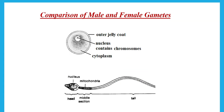Comparing the male and female gametes, the male cell is the sperm, which has a long tail to allow it to move. The sperm needs to be mobile because it enters through the cervix and moves up to the oviduct. It has mitochondria to give it energy — mitochondria is the part of the cell that carries out respiration to release energy.